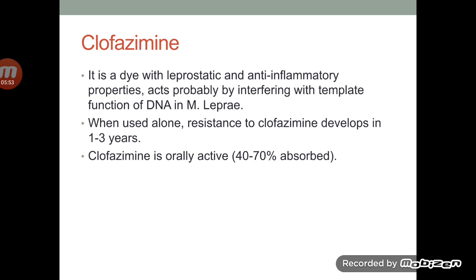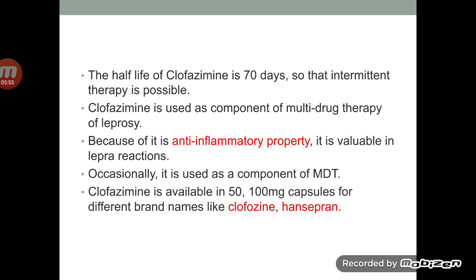It is orally active — that is, it is 40 to 70 percent absorbed. The half-life of clofazimine is approximately 70 days, so intermittent therapy is possible. It is used as a component of multi-drug therapy in leprosy. As it also has anti-inflammatory properties, it is used in various inflammatory reactions caused by this bacteria. It is available in 50–100 mg capsules under the brand names clofazimine and hansipran.